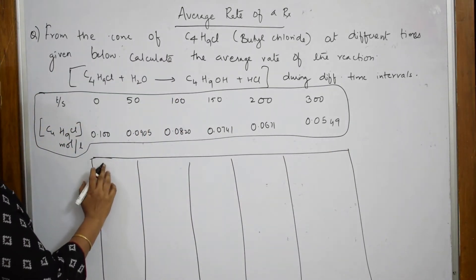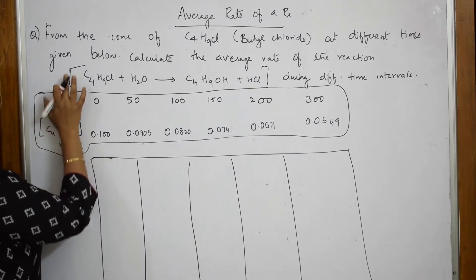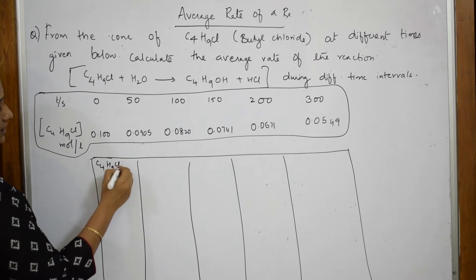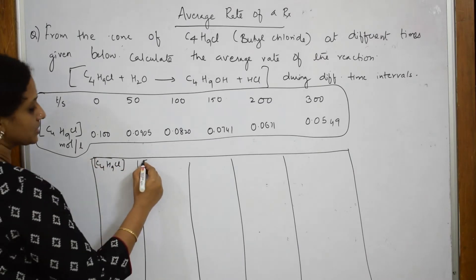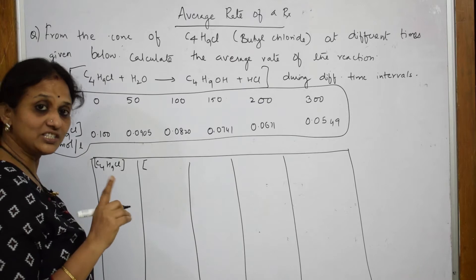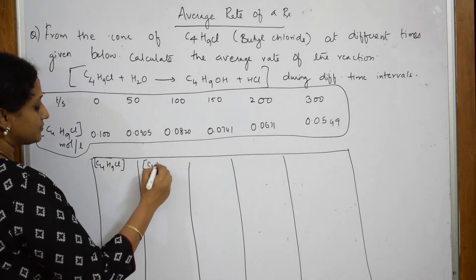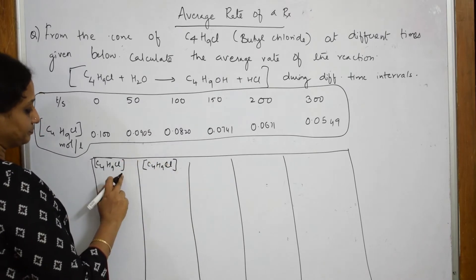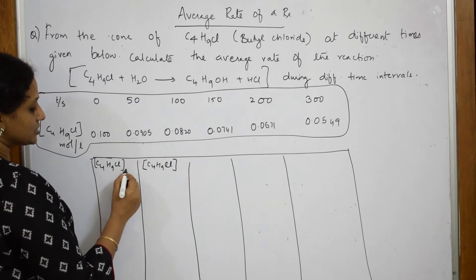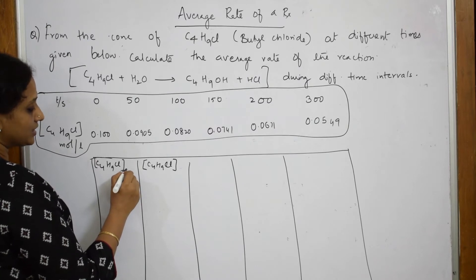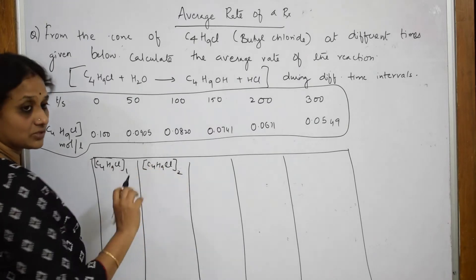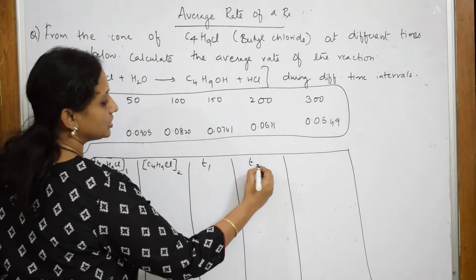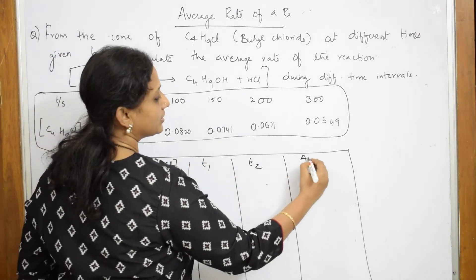The first column, I am going to write for the first concentration — C₄H₉Cl concentration — because I have to take the change in concentration of the reactants. So again, C₄H₉Cl concentration. Let me take this as the first concentration, C1, and this is your second concentration, C2. That means change in concentration, delta. This is your T1, this is your T2, and this is your average rate.